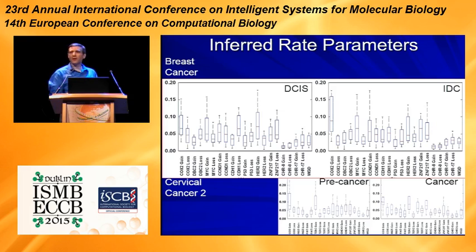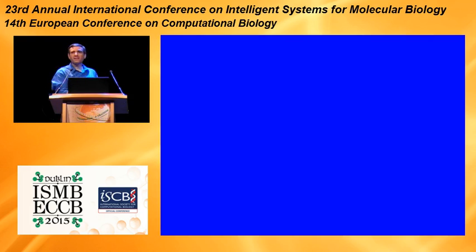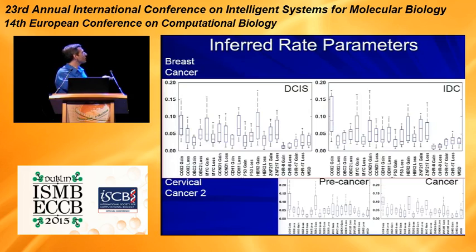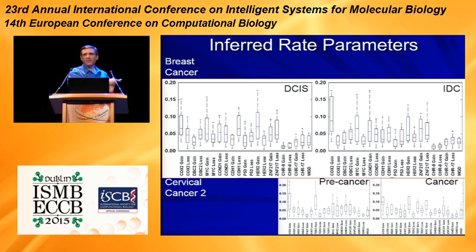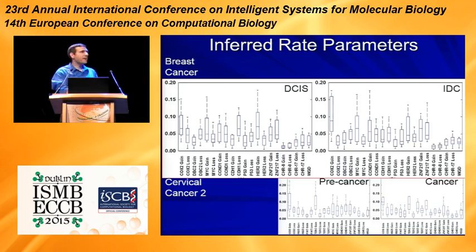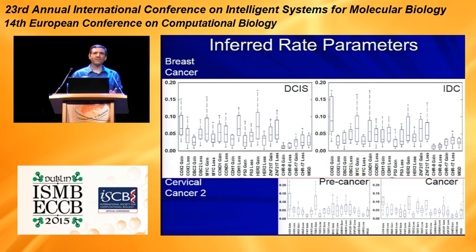We can also start to reconstruct features of these trees that tell us interesting things about cancer progression. For example, cyclin D1, an important oncogene in these cancers, doesn't actually show any selection in the pre-cancerous stage but does show selection in the cancerous stage with very high variance suggestive of subtyping. So it looks like this is a late-acting oncogene that acts in a subtype of breast cancers, which is consistent with everything we know about them.